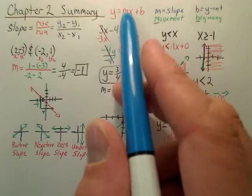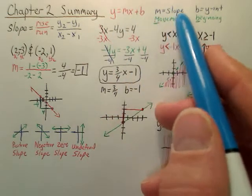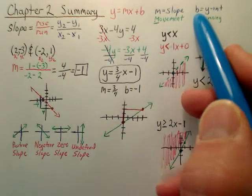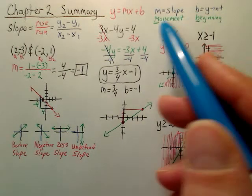This is a Chapter 2 summary. With Chapter 2, you have slope-intercept form. It's right here. The m is your slope, which I call your movement. The b is your y-intercept, which is your beginning. B for beginning and m for movement.